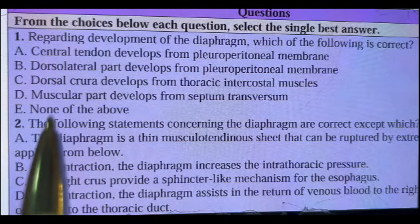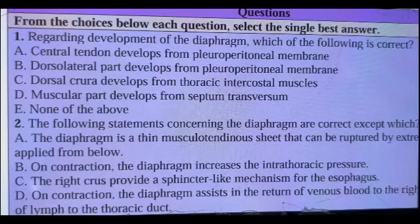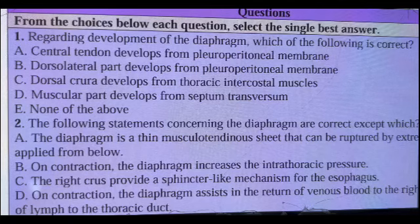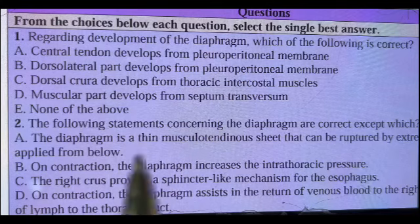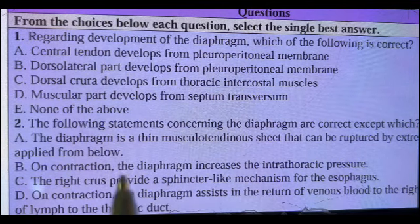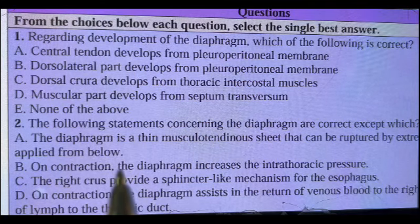The intraembryonic coelom has a horseshoe configuration. Its anterior part forms the future pericardial cavity, where the heart develops inside this cavity, and the lateral part forms the future pleuroperitoneal cavities. Then a thick mesodermal plate called septum transversum lies cranial to the pericardial cavity. At the fourth week of gestation, lateral and craniocaudal folding occurs.